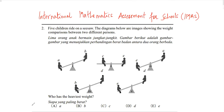Question 2: Five children ride on a seesaw. The diagrams show weight comparisons between different persons. Who has the heaviest weight? A is heavier than B, so B is not the heaviest. B is heavier than D, so D is out. E is heavier than A, so A is also not the answer. Now C and E are almost equal. E is also heavier than D, so E appears heaviest, but the answer sheet says C. According to me, it could be either E or C since they are equal.